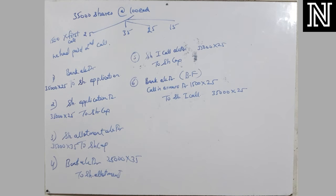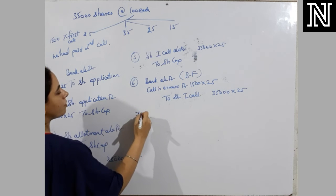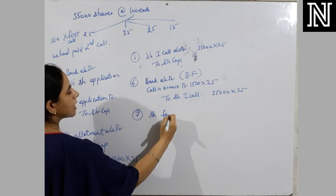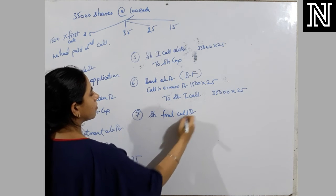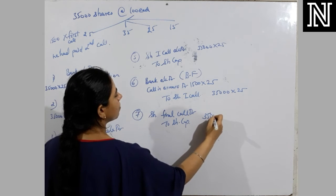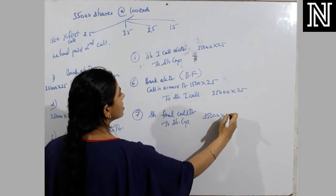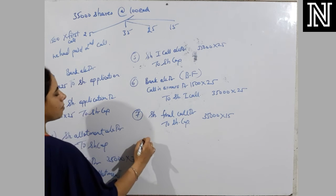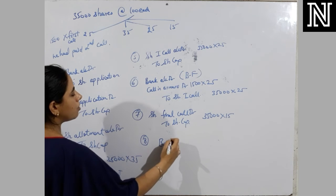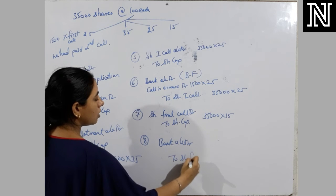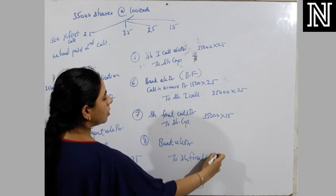So now, next entry, seventh entry for the final call. Share second and final call debit to share capital. Due will be from everyone. We will ask money from everyone. We will circulate message to everyone. So due will be by whole amount. But when we receive, bank account debit to share final call. This entry already is clear.